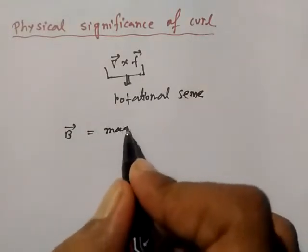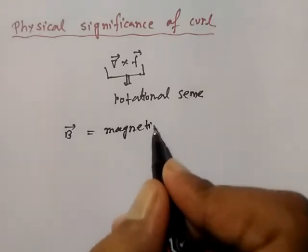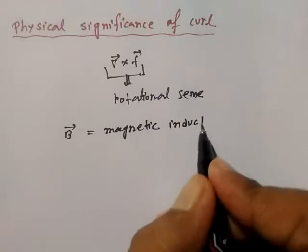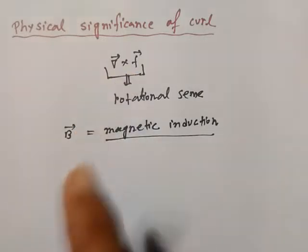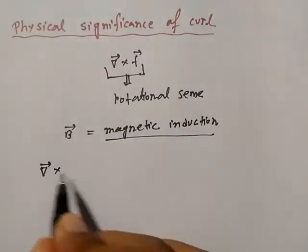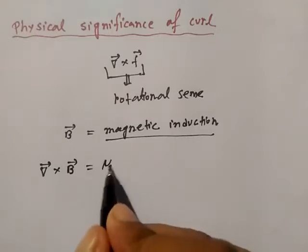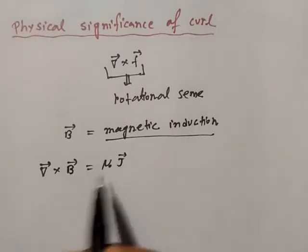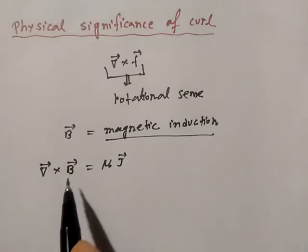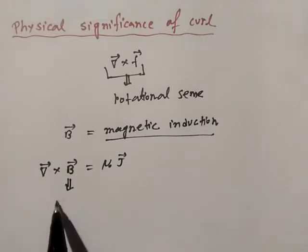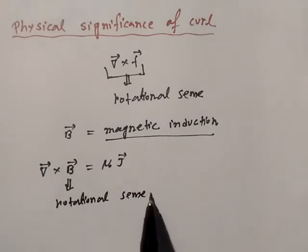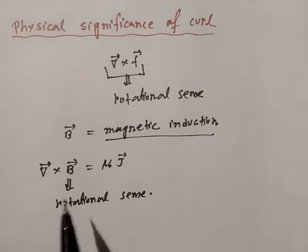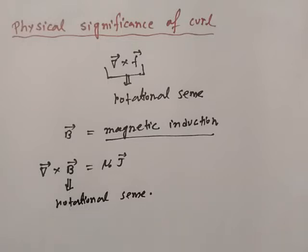The curl of a magnetic field — we know from Ampere's law that curl of a magnetic field B is nothing but μ₀ times J. So it has a finite value, meaning the magnetic field B has a rotational sense, and unlike the electric field, it does not converge or diverge to certain points.